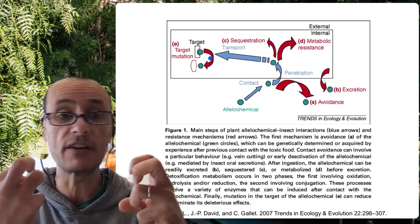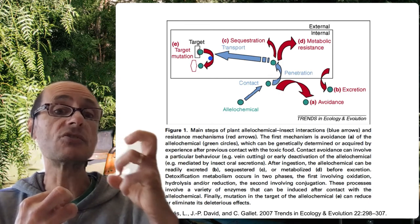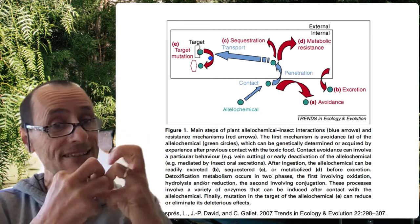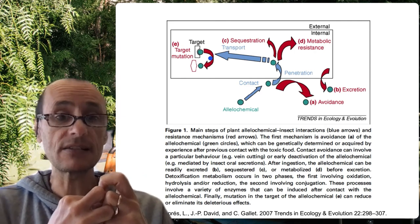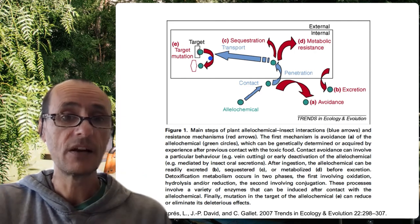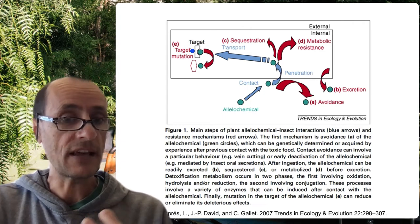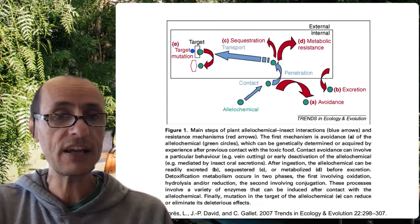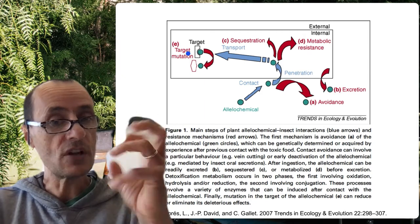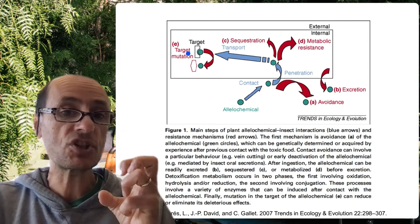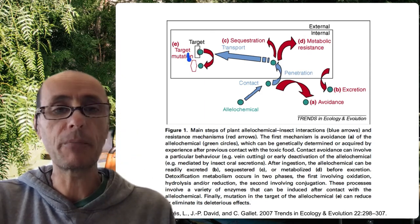It's inert as far as the insect is concerned, as long as that target is no longer sensitive. This is sometimes referred to as target site insensitivity — where the target of that molecule has changed shape through mutation so that it's no longer really a problem.